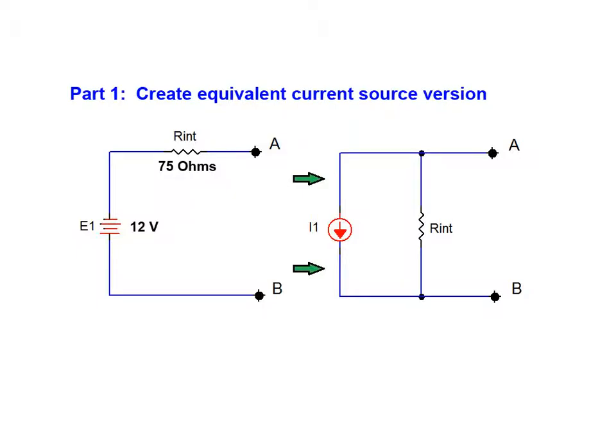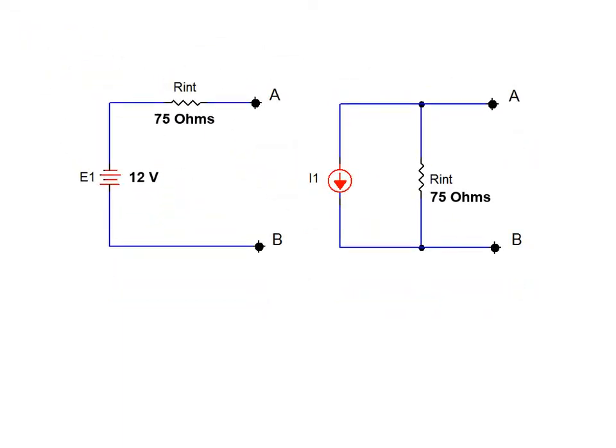We'll begin with our 12 volt voltage source which has an internal resistance of 75 ohms. As it's our intention for both sources to contain the same internal resistance, we simply use the same resistor value for our second configuration.